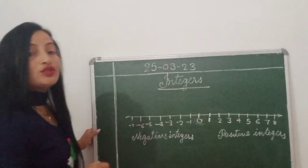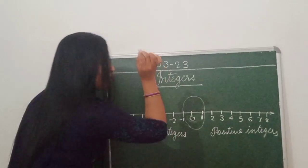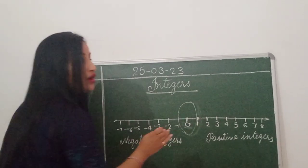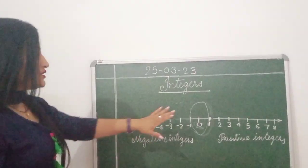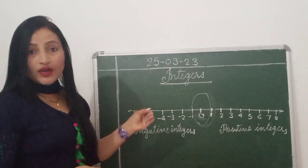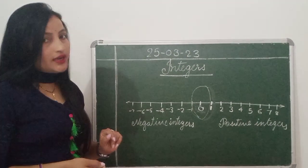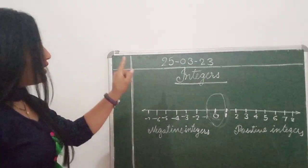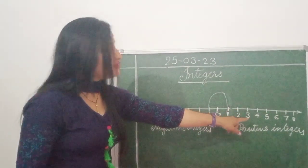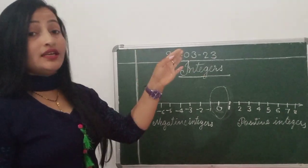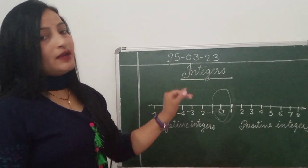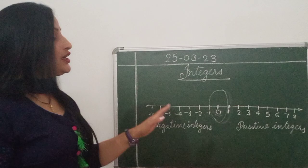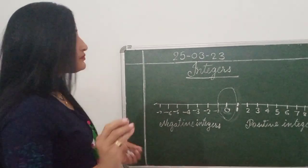These are negative integers and those are positive integers. But 0 is neither negative nor positive. Whatever I have drawn on the board, this is the number line and I have written the numbers. These are positive — where the sign is not given, but a plus sign is hiding there. Positive integers में plus की sign छिपी हुई रहती है — no need to write it, but you understand.